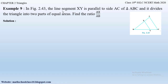Example 9 from Chapter 2 Triangles says: in figure 2.43, the line segment XY is parallel to side AC of triangle ABC and it divides the triangle into two parts of equal areas. We have to find the ratio AX by AB. The line segment XY divides triangle ABC into triangle XBY and quadrilateral AXYC, which have equal areas.